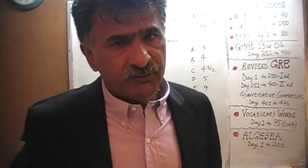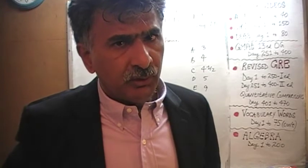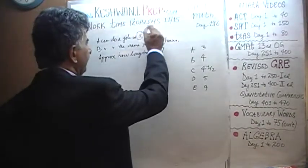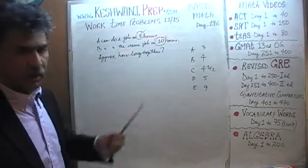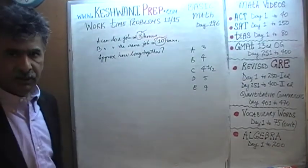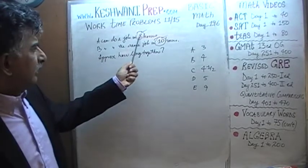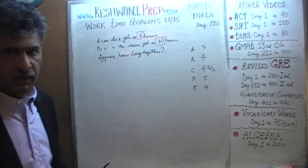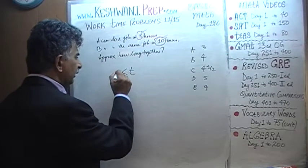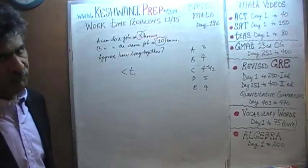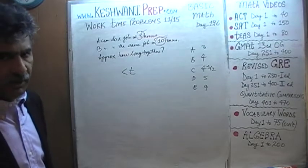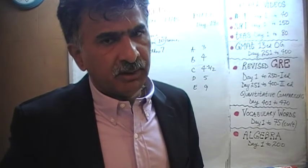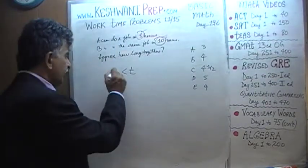There are two approaches here. One is the traditional academic way; another is the quick and dirty way. The quick and dirty way: this worker takes 8 hours, this one takes 10 hours. What if they both took 8 hours? Then in 4 hours A could do half the job and B could do the other half — they'd be done. But B is not working as fast as A; B takes 10 hours. So obviously they can't finish in 4 hours. This tells us the correct answer has to be more than 4.